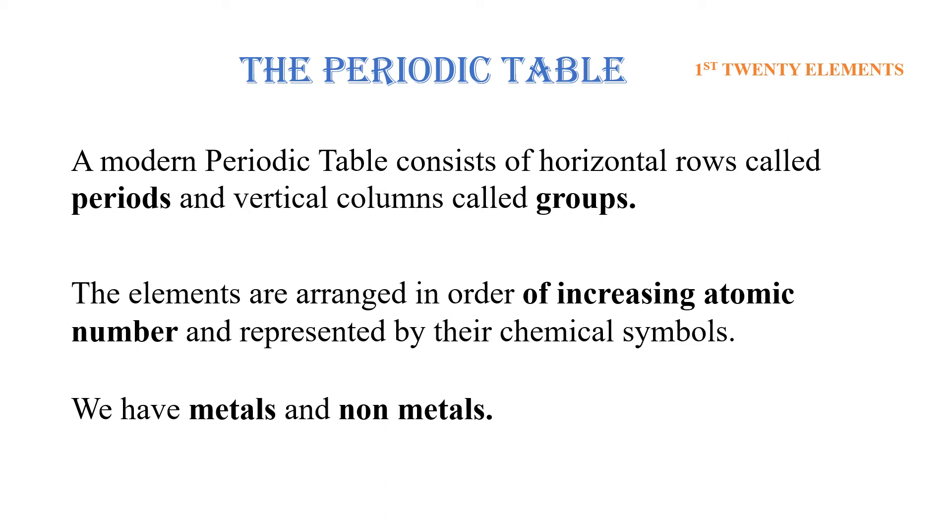The elements in a periodic table will always be arranged in order of their increasing atomic numbers and represented by their chemical symbols. We shall see that we basically have metals and non-metals, although metalloids might also be included.